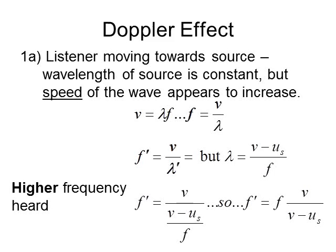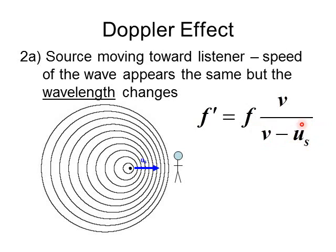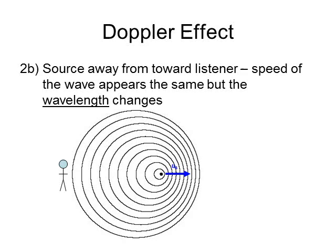For a source moving toward the observer, F-prime equals F times V divided by (V minus U-sub-S), where U-sub-S is the speed of the source. We subtract in the denominator because moving toward makes the denominator smaller, making the fraction greater than one, so the observed frequency is higher — which is exactly what we'd expect.